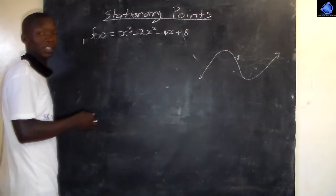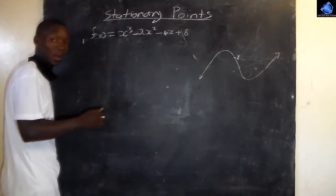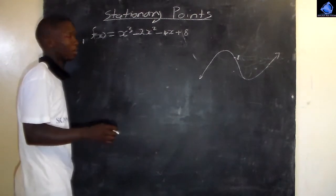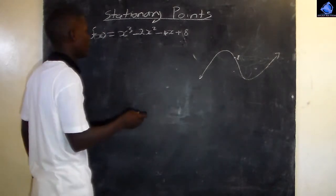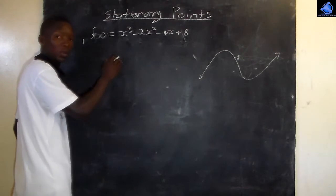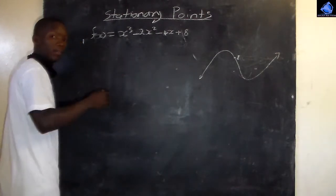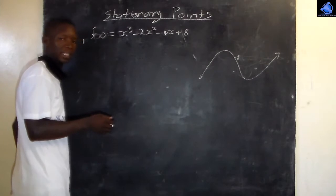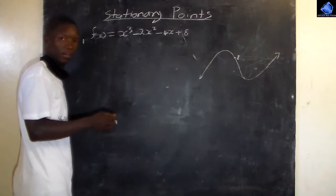Now let's talk about finding the stationary points. Step one is to find the first derivative of the equation.